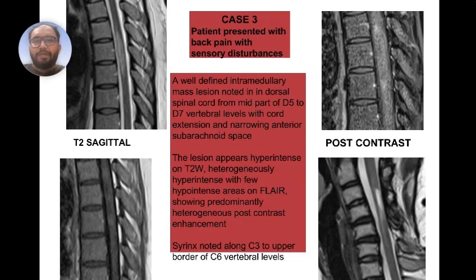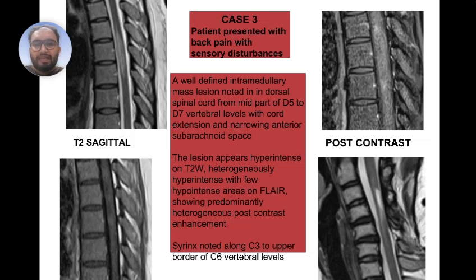Case 3: A patient presented with back pain and sensory disturbances. A well-defined intramedullary lesion is seen in the dorsal spinal cord from mid D5 to D7 vertebral level with cord expansion and narrowing of the anterior subarachnoid space. The lesion appears hyper-intense on T2-weighted images, heterogeneously hyper-intense with few hypo-intense areas on FLAIR, showing predominantly heterogeneous post-contrast enhancement. A syrinx is noted along C3 to the upper border of C6 vertebral level. Thank you.